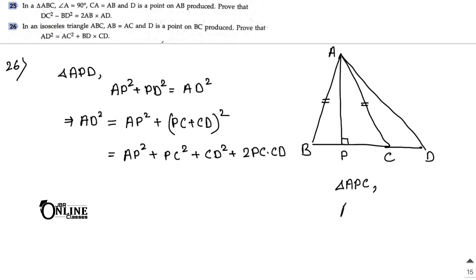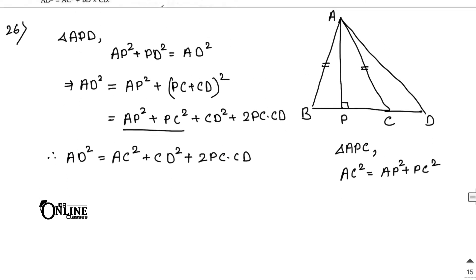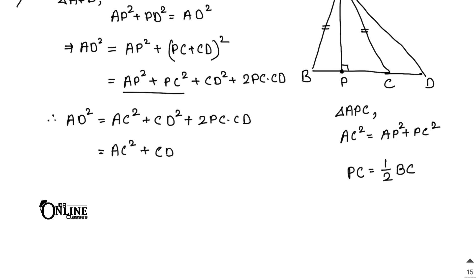Expanding: AD² = AP² + PC² + CD² + 2·PC·CD. From right angle triangle APC: AC² = AP² + PC². So AD² = AC² + CD² + 2·PC·CD. Since triangle ABC is isosceles and AP is perpendicular to BC, P is the midpoint of BC, so PC = ½BC.